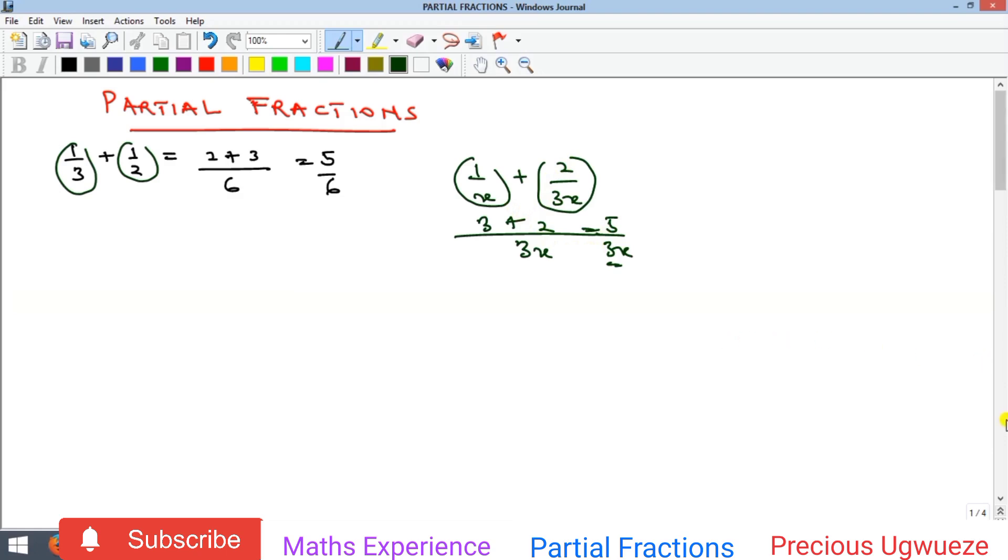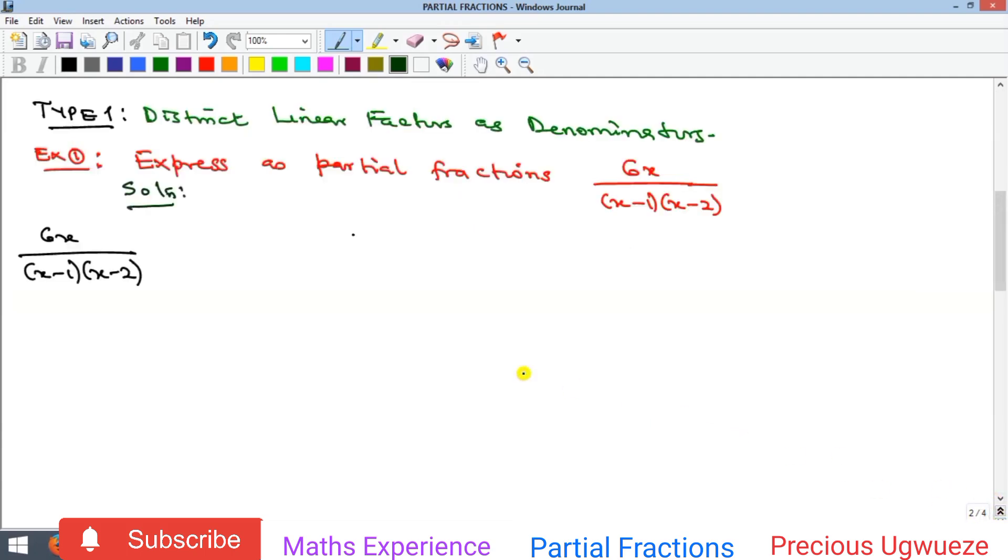The process depends on the type of partial fraction you have or the type of single fraction you have. We are going to look at the different types of single fractions and how to resolve them into their partial fractions. For example, the first one is when you have a single fraction where the denominators contain linear factors.